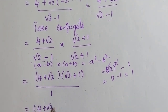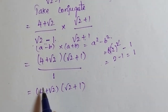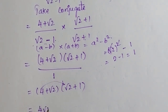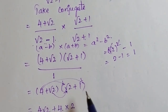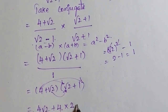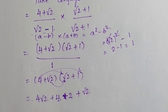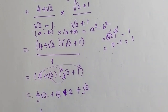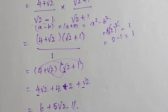So the expression equals (4 + √2)(√2 + 1). Expanding: 4 × √2 = 4√2, 4 × 1 = 4, √2 × √2 = 2, √2 × 1 = √2. Combining: 4 + 2 = 6, and 4√2 + √2 = 5√2. Therefore the answer for this question is 6 + 5√2.